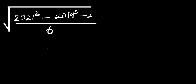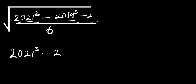Hello, you are welcome. How to simplify the square root of 2021 raised to the power of 3, minus 2019 raised to the power of 3, minus 2, divided by 6. What we are going to do first is just copy the numerator out: we have 2021 raised to the power of 3 minus 2019 raised to the power of 3, minus 2.